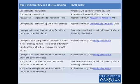If you are an undergraduate or postgraduate student who has completed at least six months of your course, but you have taken a period of temporary withdrawal or resit without residence and are currently overseas, you should request a CAS online from the immigration service.